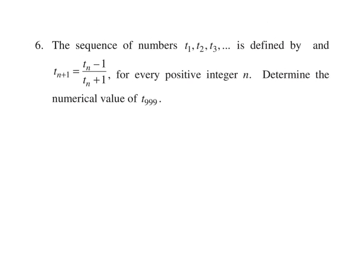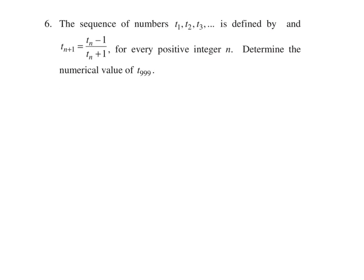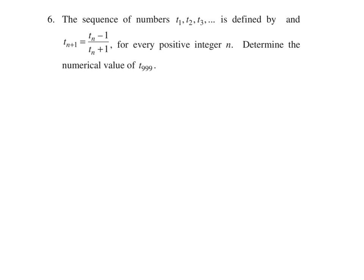The sequence T1, T2, T3 is defined by T(n+1) equals (Tn minus 1) over (Tn plus 1) for every positive integer n. Determine the numerical value of T999. There's actually a typo in this question — there should be T1 equals 2, otherwise you couldn't proceed. So we have to use this recursive formula to keep going. We're obviously not going to compute all the way up to T999 — my assumption is there will be some pattern we can extrapolate.